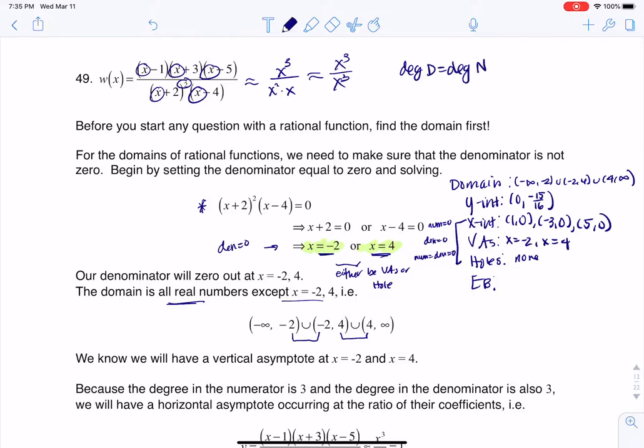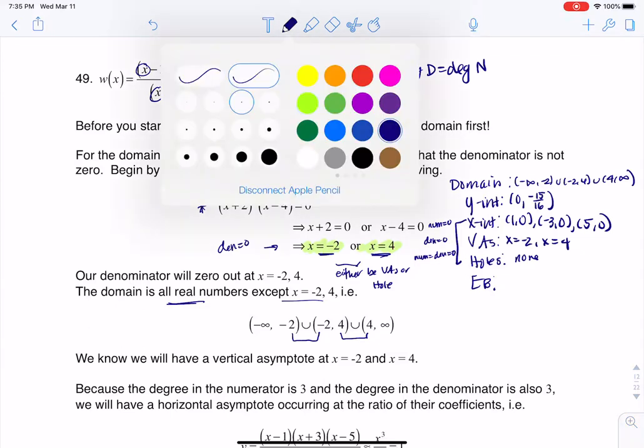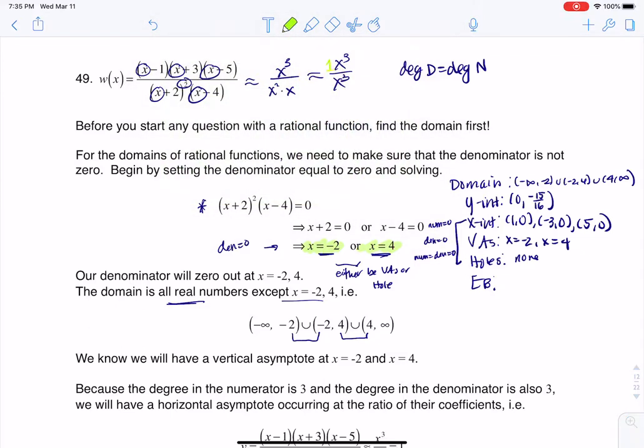And when that's the case, I want to take the ratio of the lead coefficients. The lead coefficient here is one and one. So what I'm looking at is I ultimately have a horizontal asymptote at Y equals one.